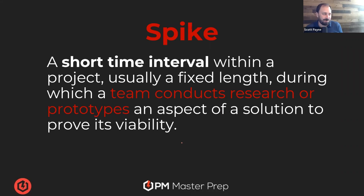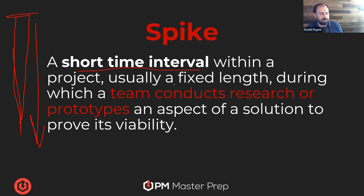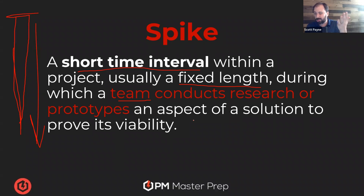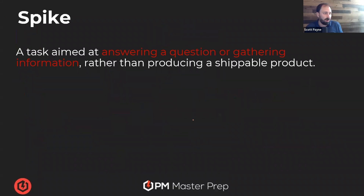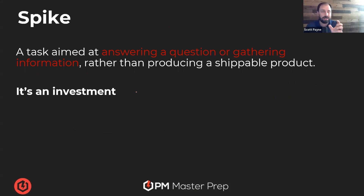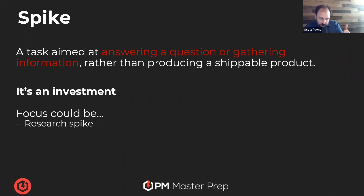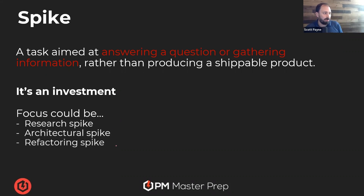So spike — it's like a railroad spike. It's a short time interval within a project, usually a fixed length — like take four hours, let's do this. During which a team or team member conducts research or creates a prototype on an aspect of a solution to prove its viability. In plain English that means: we don't know how to do this, we don't know what it will look like — figure it out. Don't take forever, take like four hours. Do a little research trip and tell us what you find. It's an investment of time. We're making an assertion to do it during a sprint: we're not going to actually build the thing, we're going to learn about the thing — to research something, to understand the architecture needed to build something, or to refactor. Refactor is to take a solution and make it simpler.